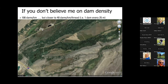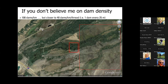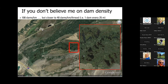If you don't believe these densities, let's go to a place in Wyoming just off I-80. Zooming in, these are all beaver dams in different threads. Just counting them, it's nearly 100 dams per kilometer. A single thread is probably close to 40 dams per kilometer. So I think those upper limits are probably pretty appropriate.